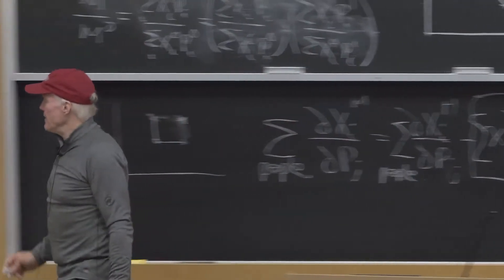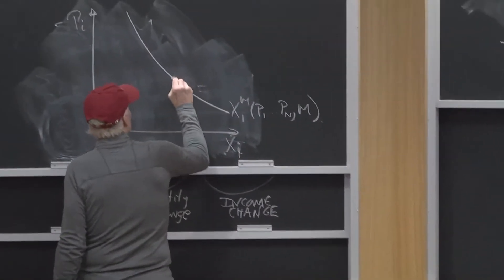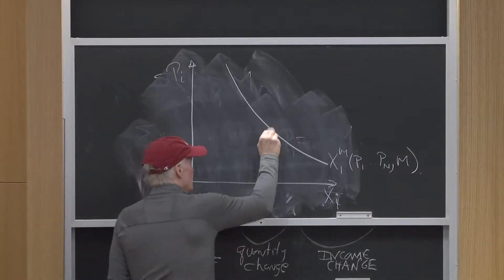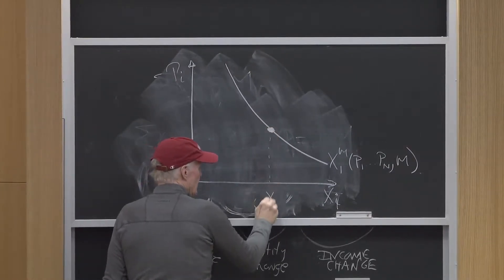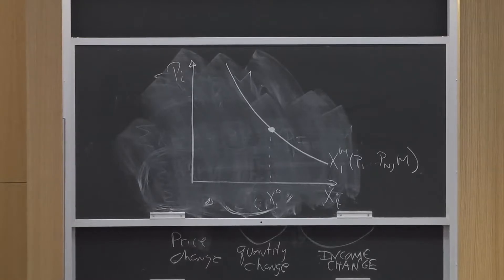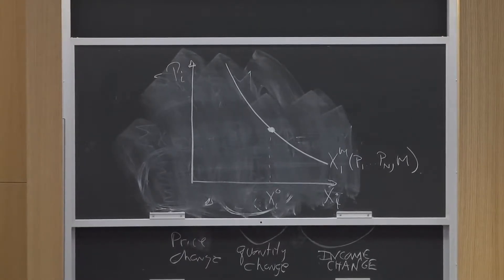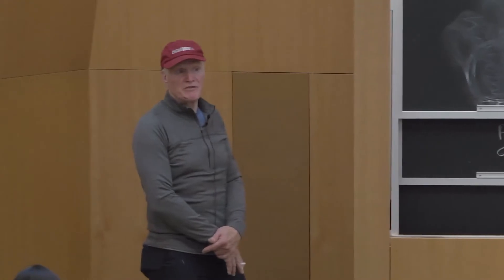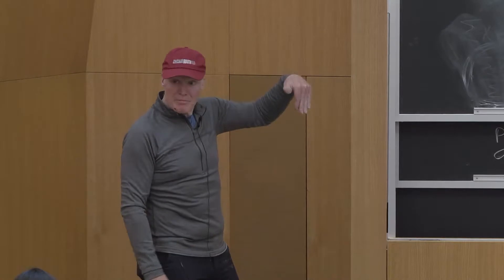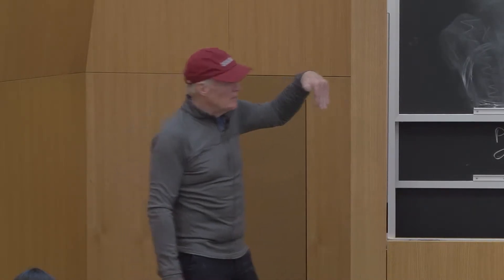What does the Hicksian demand curve look like in this world? Let's take a given point, that point there. If this was a normal good, what would the Hicksian demand curve look like, holding utility constant rather than income constant? It's going to be steeper, not as responsive to price.